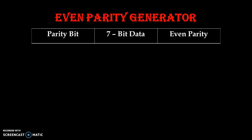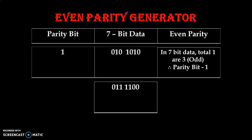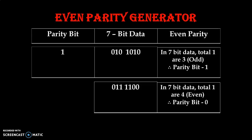Let us take one example for even parity. Suppose we take the number 0101010. If we analyze, the total number of 1s are 3, which is odd. Since this is an even parity generator, we have to add the parity bit in such a way that the total number of 1s becomes even, so the parity bit must be 1. Similarly, if we take the number 0111100, the total number of 1s are 4, which is already even, so the parity bit must be 0 to keep it even.